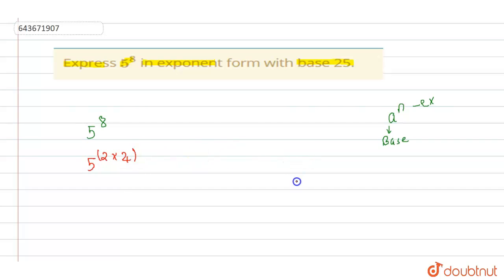So the property, powers to the powers property: a to the power m into n is equal to a to the power m raised to the power n. So if we put that m inside, it will be written as 5 squared to the power 4.